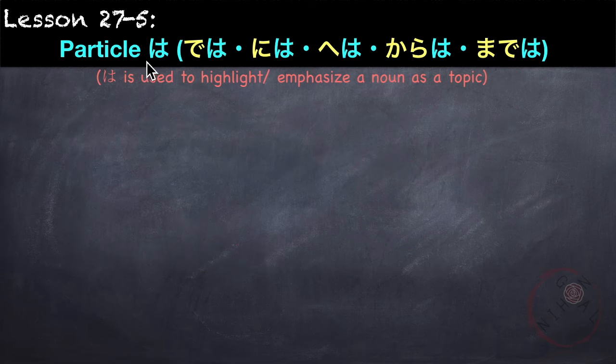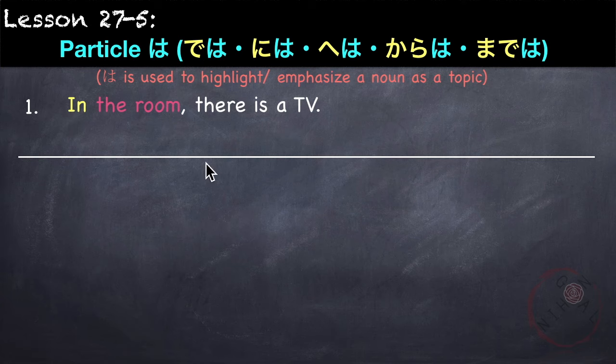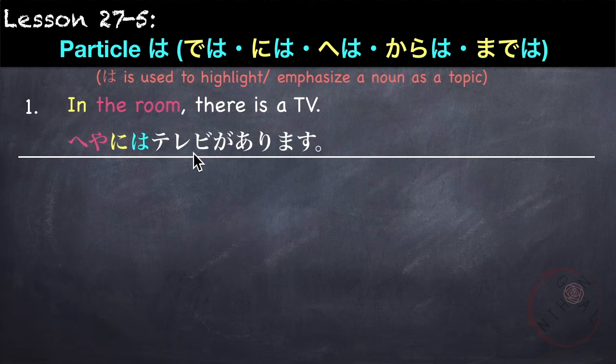Next is the particle は which follows other particles. The は particle is used to highlight or emphasize the noun as a topic. Sometimes it replaces が and を (as learned in lessons 10, 17, and 26). However, if the particle is で, に, or へ, we don't remove it — we add は after it: では、には、へは. For example: In the room there is a TV — 部屋には テレビが あります。